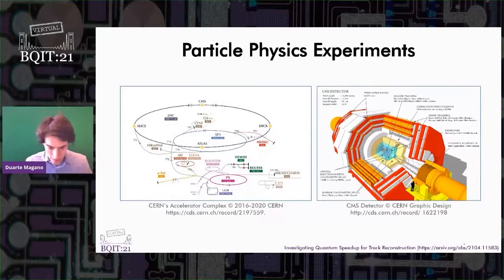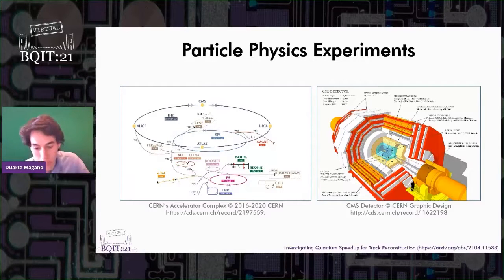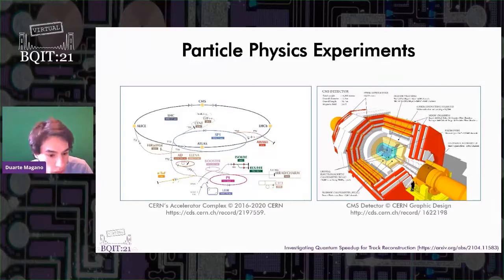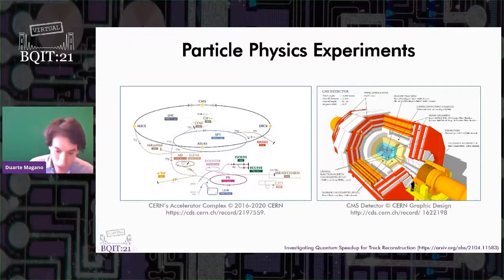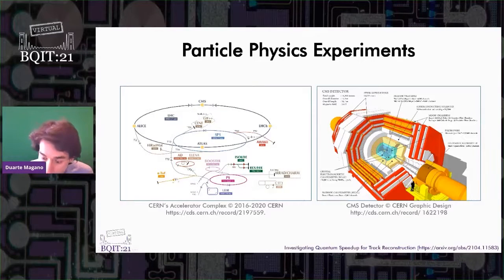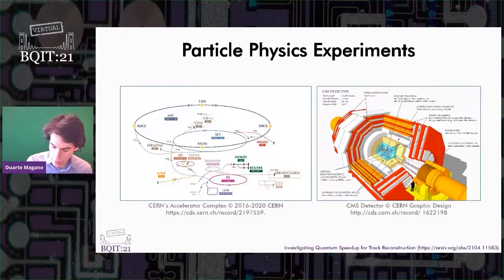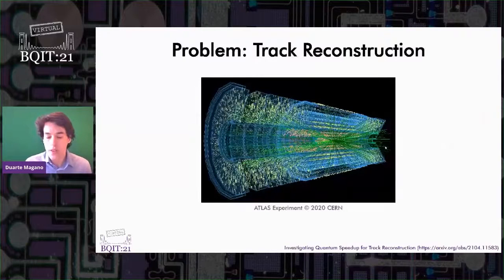Let's start by motivating the problem we study. Most of our understanding about fundamental interactions and the subnuclear structure of matter comes from colliding highly energetic particles in accelerator machines. On the left-hand side, we see a sketch of the Large Hadron Collider at CERN, which sets bunches of protons going around in opposite directions at near the speed of light. These bunches are made to collide at specific locations along the beamline where particle detectors are located — such as the CMS detector shown on the right. These detectors are composed of multiple sensor layers. When particles collide, many secondary particles are produced and scattered in all directions. As these particles cross the detector's multiple layers, they leave signals called hits. The collection of hits left by a particular particle is called that particle's track. To understand the underlying physics, we need to reconstruct the trajectories of the particles, which starts by reconstructing the tracks.